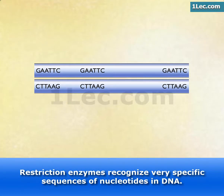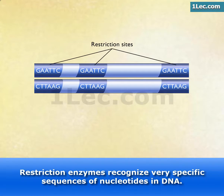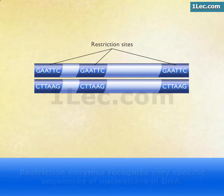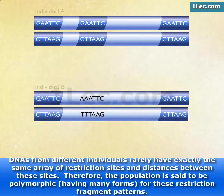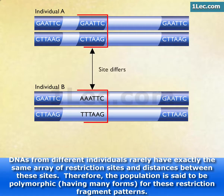Restriction enzymes recognize very specific sequences of nucleotides in DNA. DNAs from different individuals rarely have exactly the same array of restriction sites and distances between these sites.